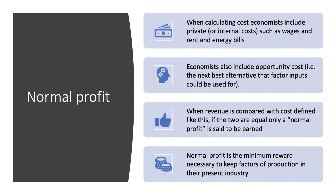But they also include the opportunity cost of using factors of production or using finance to fund the business. So if I put £100,000 into a business, I need at least, let's say, 3% return. Because I could have put that money or bought some factors of production to earn an alternative return — put the money in a bank or put it in some other activity. So the opportunity cost, the next best alternative that factor inputs could have been used for, is included in cost.